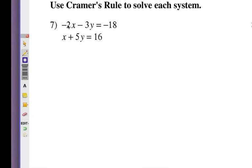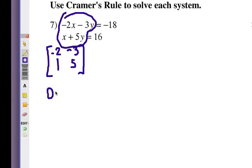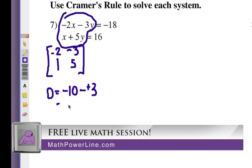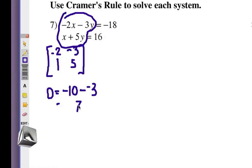Let's look at number seven here. We have negative 2x, negative 3y equals negative 18, and we have the other linear equation, x plus 5y equals 16. Now first of all, we're going to take a look at this part here, and we're going to have the coefficient matrix. So that's going to be negative 2, positive 1, negative 3, positive 5. Let's go ahead and determine, figure out the determinant there. Cross multiply, that'd be negative 10 minus negative 3, which would have to be, change the sign there, that would have to be a negative 7.